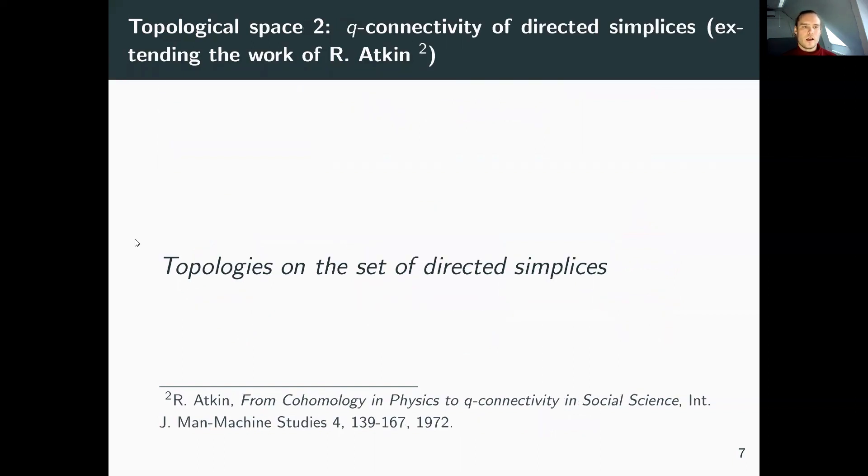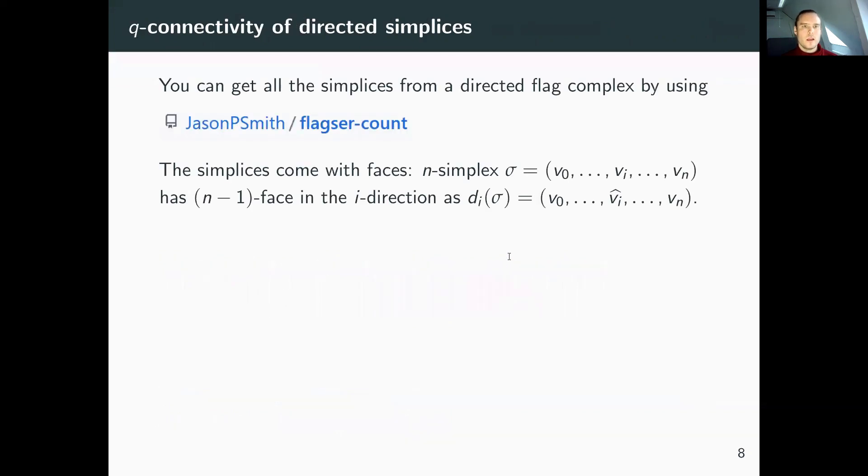I want to introduce a second construction for building topological spaces. This comes from the q-connectivity of directed simplices, which extends previous work of Atkin. The basic setting is that we want to build topology on the set of directed simplices. First, we need to get all the simplices. You can do this by going to GitHub and getting a variant of flagger called flagger-count, which outputs all the directed simplices of your directed flag complex.